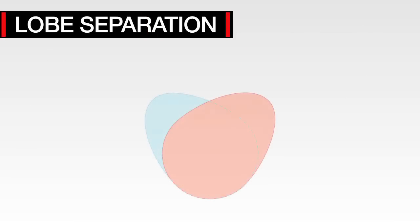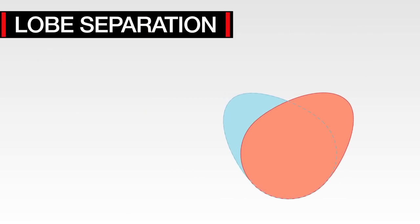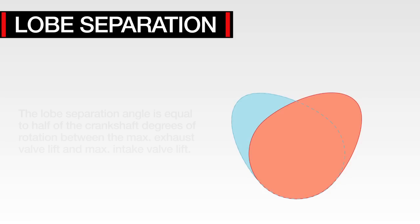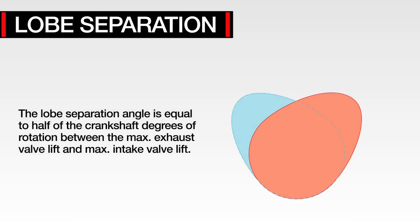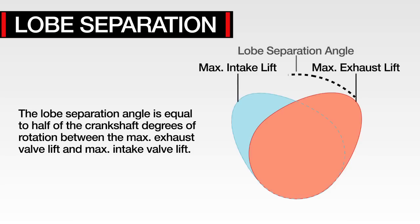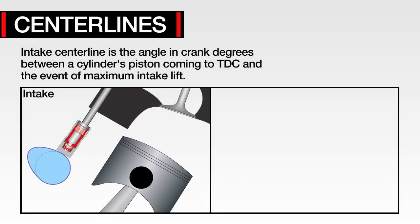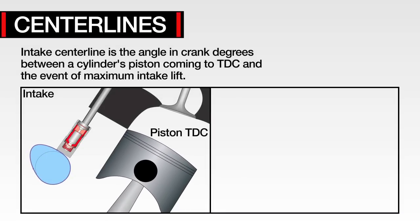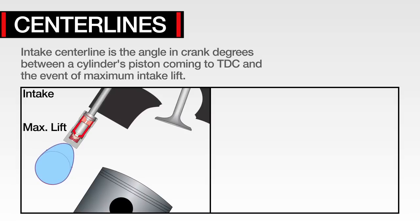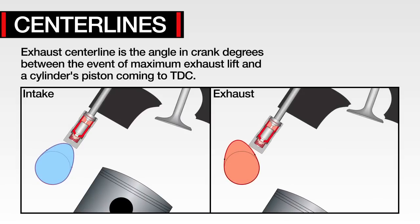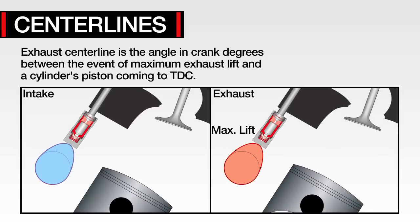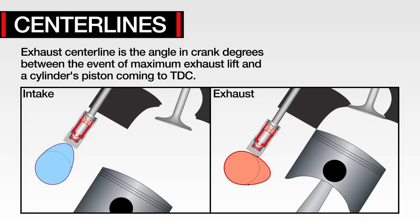Also commonly confused are lobe separation and intake centerline, although they are very different measurements that control different events in the engine. The lobe separation angle is equal to half of the angle in crankshaft degrees of rotation between the maximum exhaust valve lift and maximum intake lift. It cannot be changed after the initial cam grind. The intake centerline is the angle in crank degrees between a cylinder's piston coming to top dead center and the event of maximum intake lift. Exhaust centerline is the angle in crank degrees between the event of maximum exhaust lift and the cylinder's piston coming to top dead center.